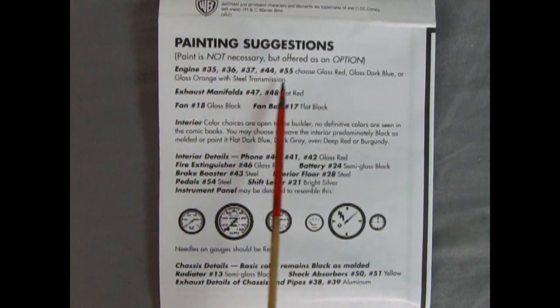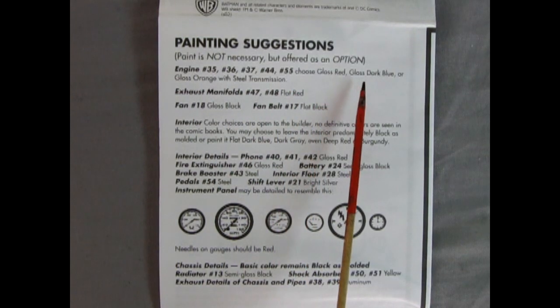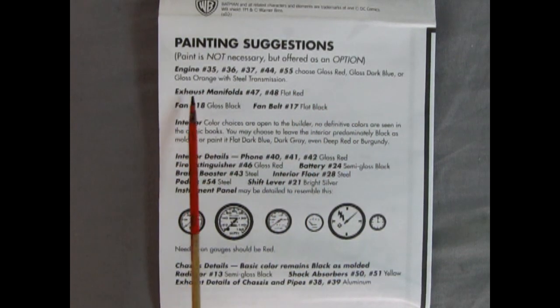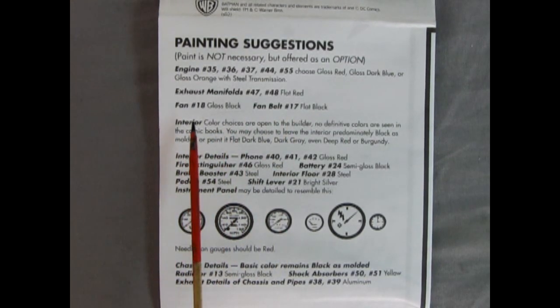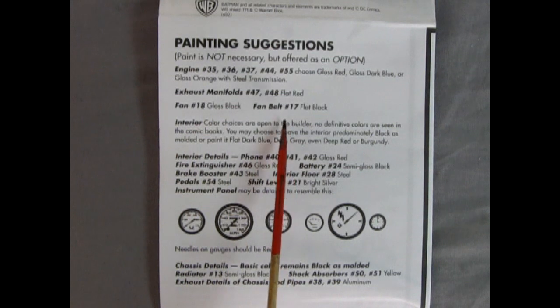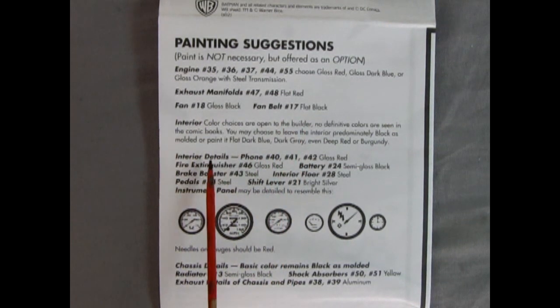The engine is gloss red, dark gloss blue, or orange gloss with a steel transmission. The exhaust manifolds are flat red, the fan is gloss black, and the fan belt is flat black.